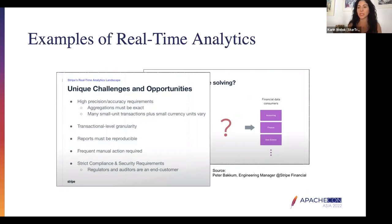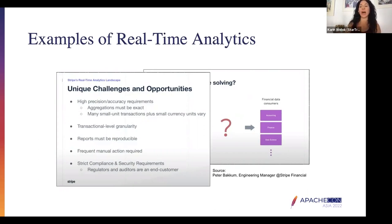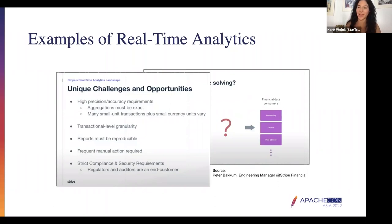So what Stripe did was pull all this data in from dozens of different engineering teams in real time and make it accessible to all these other teams in real time — which, if you've ever tried to build anything like this, is quite a complex task. As you can see, there are a lot of challenges for Stripe as a financial transactions company, including data accuracy, precision, sensitivity, and security. They have to make sure they're building something dependable and secure.